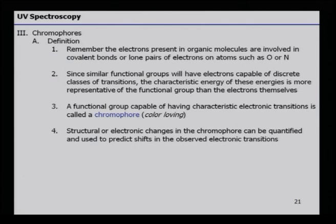Structural or electronic changes in the chromophore can be quantified and used to predict shifts in the observed electronic transitions. That means whether there is a simple double bond or a double bond with a heteroatom can be determined using this, because it allows pi to pi* transitions and n to pi* transitions — and these are only possible in those two cases.